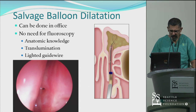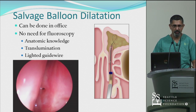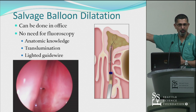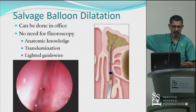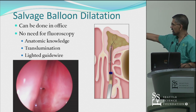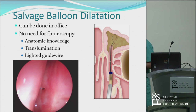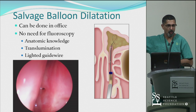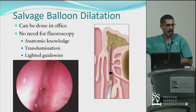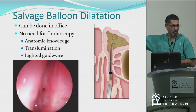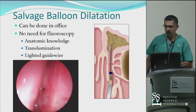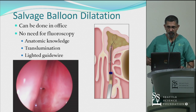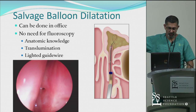Salvaging a frontal sinusotomy: there's a very nice role for the balloon. Let's say this is a patient you operated on two years ago, and periodically and progressively you're seeing gradual cicatricial stenosis. Every time this patient gets a cold or an allergic exacerbation, she gets a headache — it wouldn't surprise you that inflammation in that already pinpoint opening is going to cause it to close off and become symptomatic. This is a great use of a balloon to salvage.